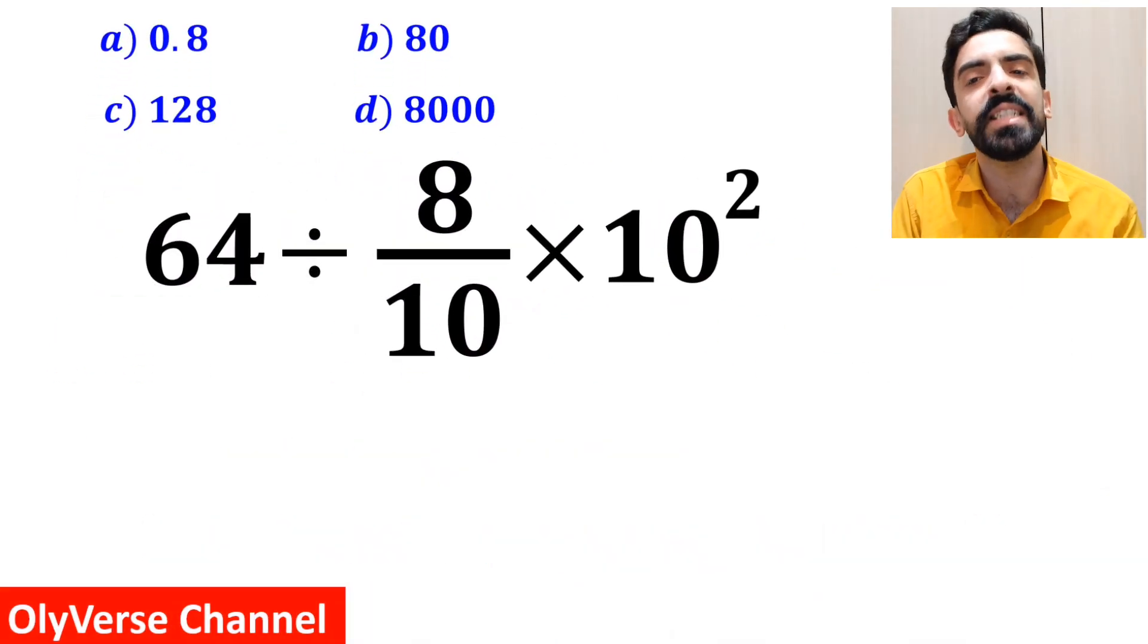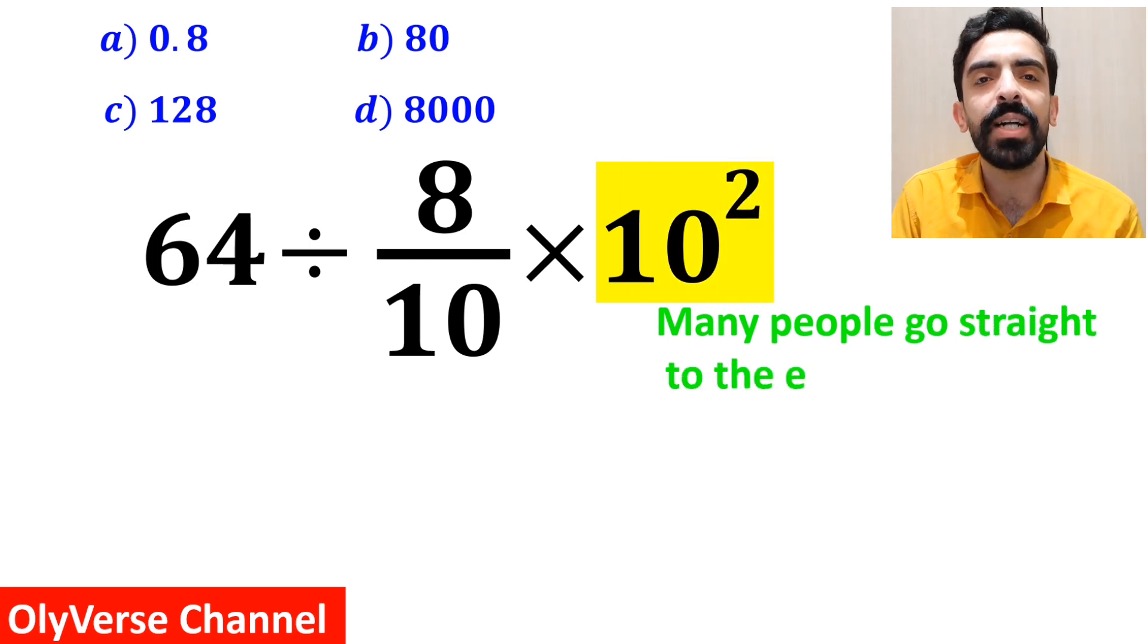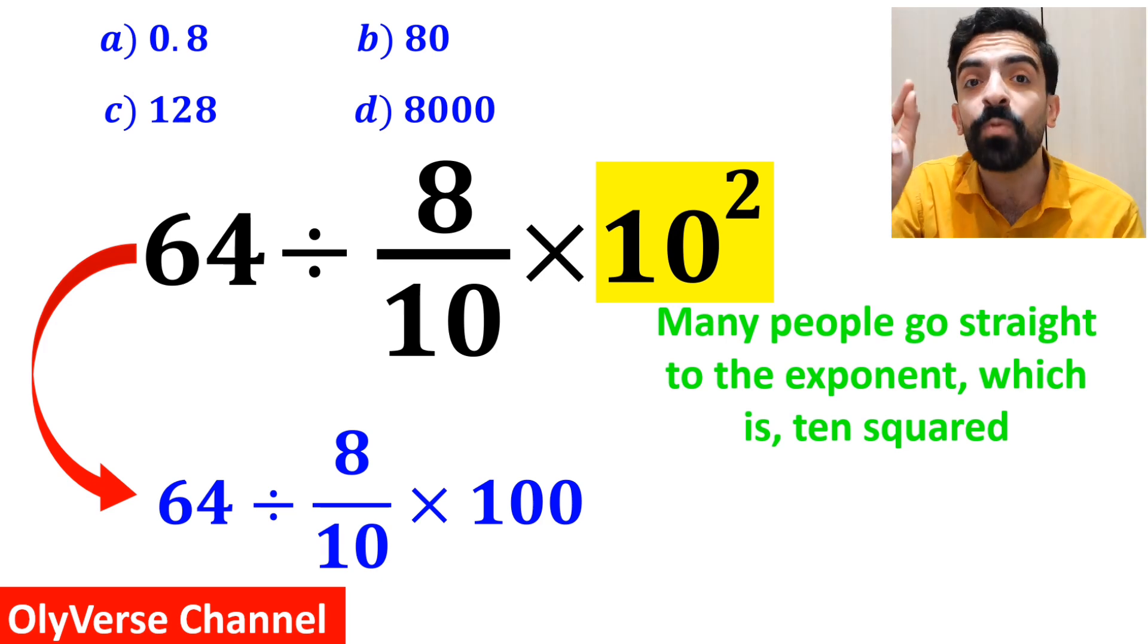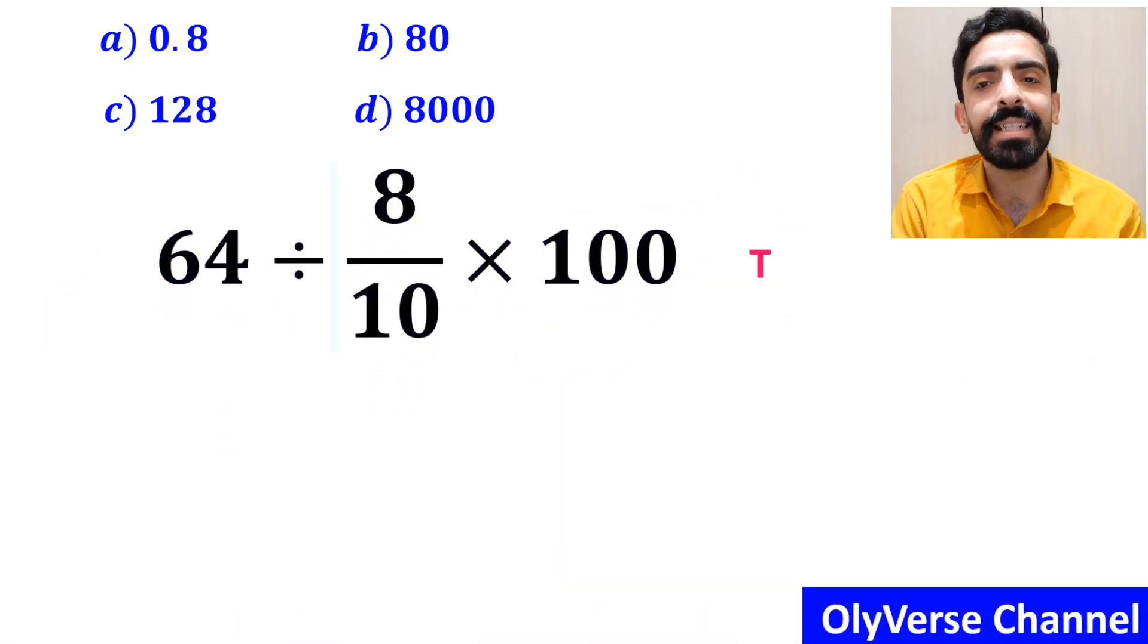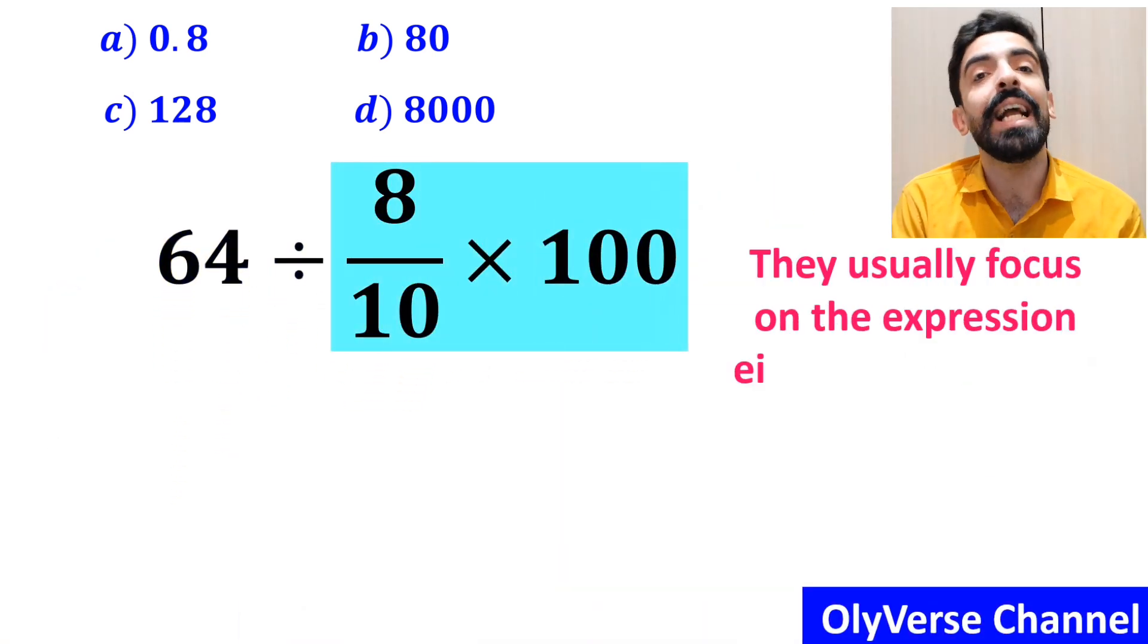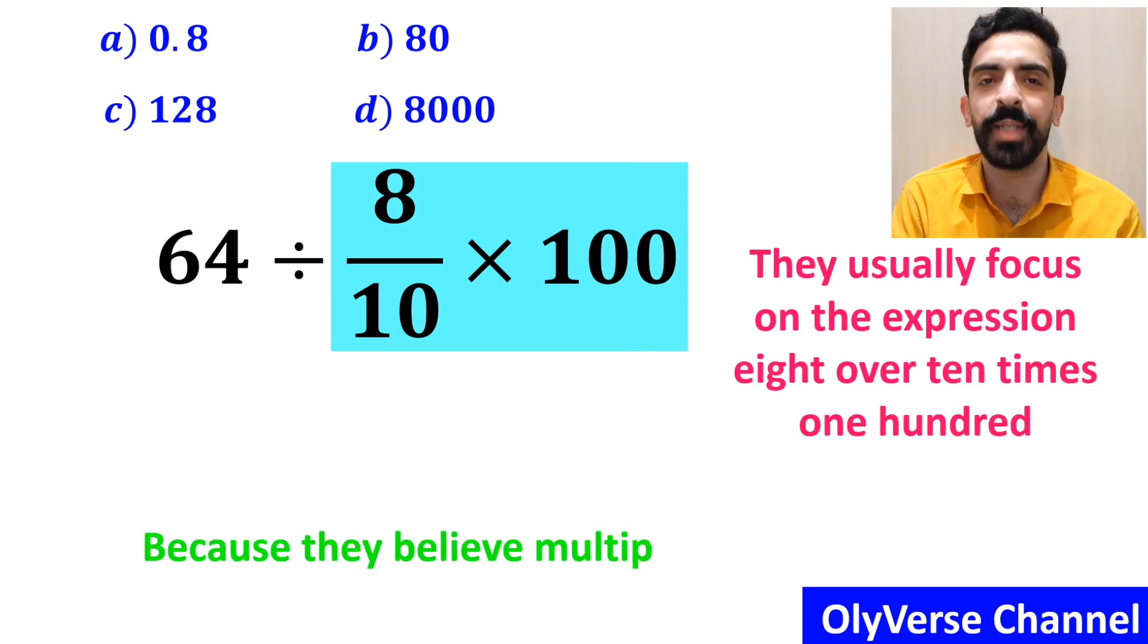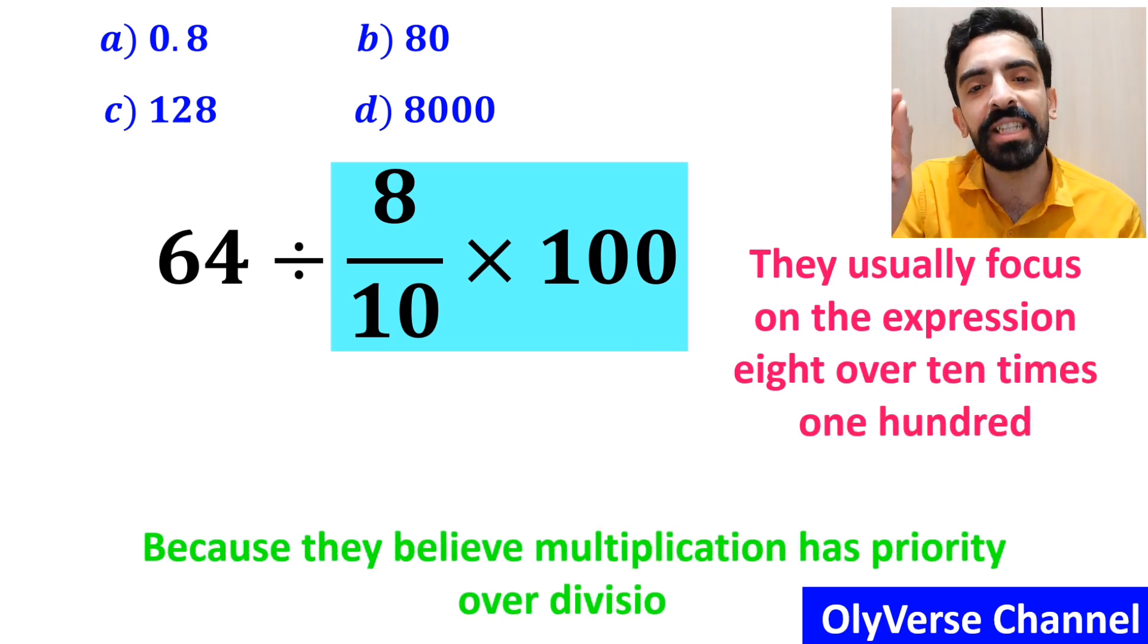In the first step of solving this question, most people go straight to the exponent, which is 10 squared, and simplify the whole expression to 64 divided by 8 over 10 times 100. In the next step, they usually focus on the expression 8 over 10 multiplied by 100, because they believe multiplication has priority over division.